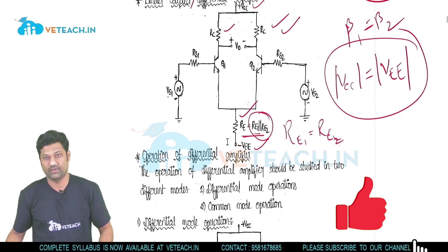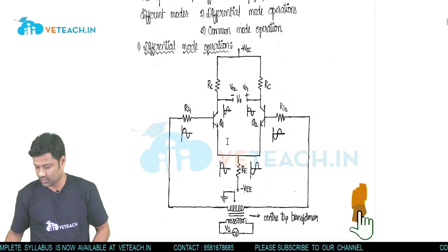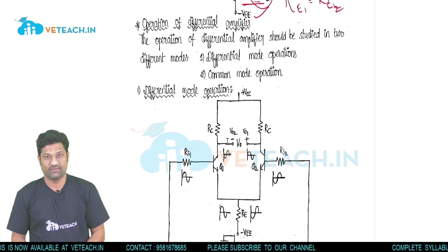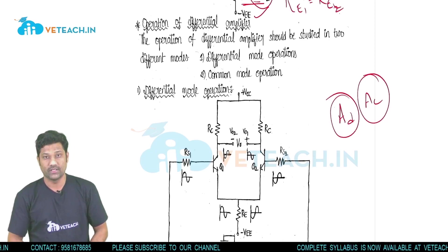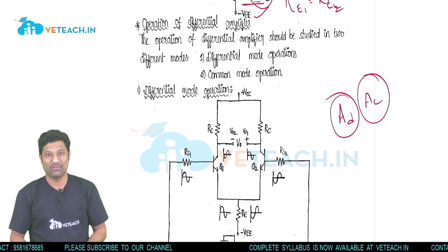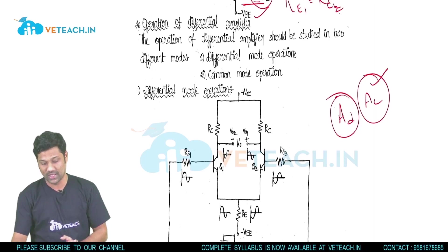Now we will look at the operation of the differential amplifier. As we have seen, there are two gains: Ad, the differential gain, and Ac, the common mode gain. This differential amplifier works with two different operations. Unlike other amplifiers that work with only one operation, this differential amplifier has two gains and thus two different modes of operation.